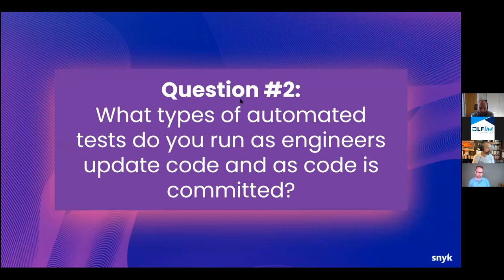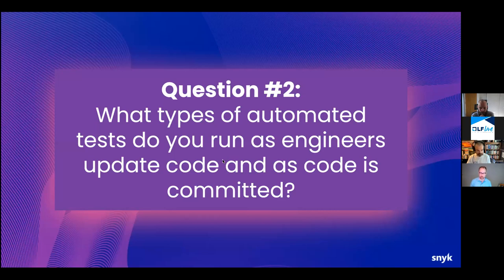Linting came up as the number one result — not surprising, it's a pretty common thing and can be built into a number of places. Lots of IaC validation, and lots of people who are not doing much testing yet either. That kind of echoes what we saw in the warm-up question about obstacles to adopting IaC. Not a lot of people doing security and misconfiguration tests just yet. Some people are just starting so they're not doing a whole lot yet.